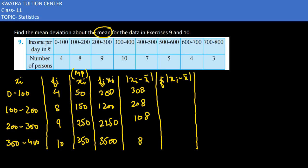Now what do we need to do? We have to take f×|x - x̄|. Multiply this column. So 308 into 4 would be 1232. 208 into 8 would be 1664. Then you have 972. Then you have 80.